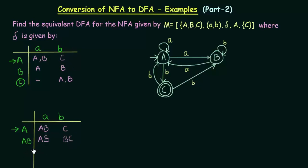Now the reachable states from AB are AB (already discussed) and BC. Let's discuss state BC. Performing union operations of B and C: on getting input A, the union of B's result (A) and C's result (φ) is just A. On getting input B, the union of B's result (B) and C's result (A, B) gives AB. So BC goes to A on input a and to AB on input b.